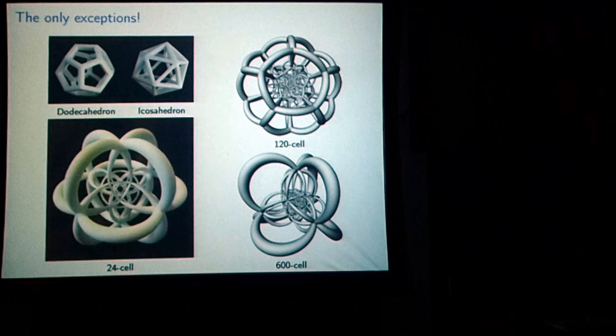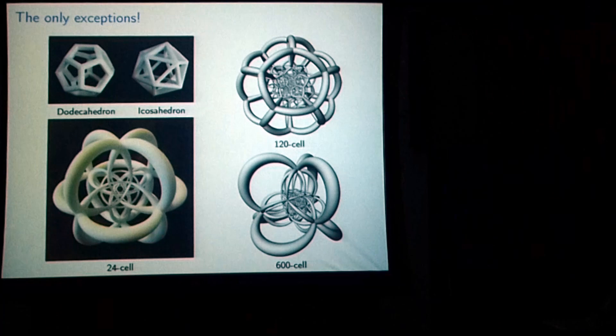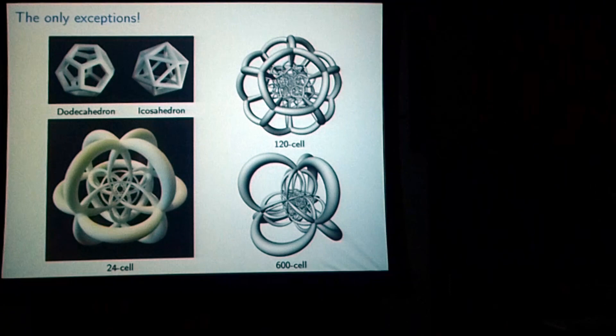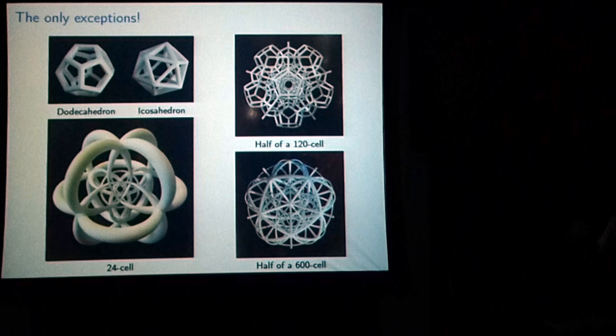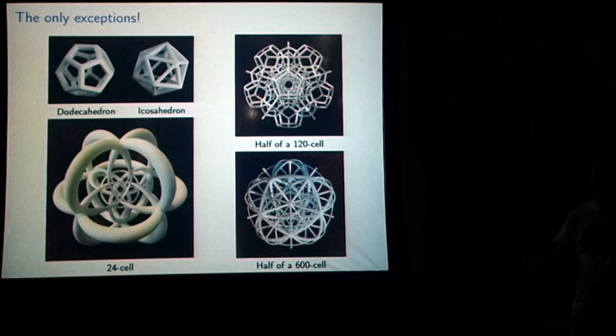The 120-cell has 120 dodecahedra inside of it — a lot of dodecahedra. And the 600-cell has 600 tetrahedral faces. These are just enormous. If you want to print one, it would have to be very large and very expensive. So the thing to do is only print half of them. This is the part of the 120-cell which is in the southern hemi-hypersphere — you slice it in half and look at just the bottom half. It's still plenty complicated, but at least you can make a picture of it.